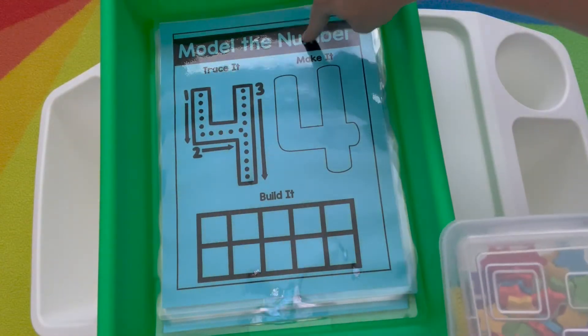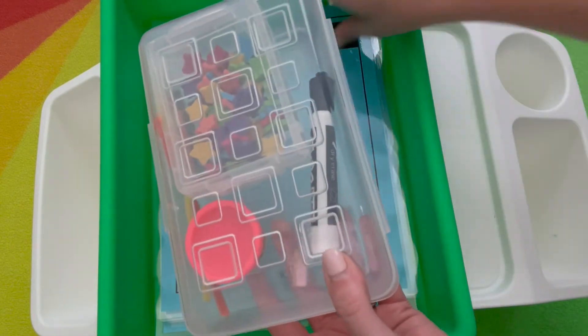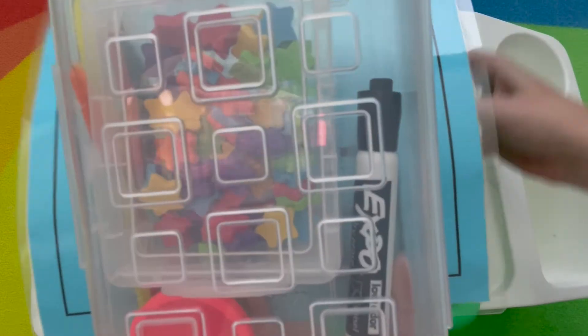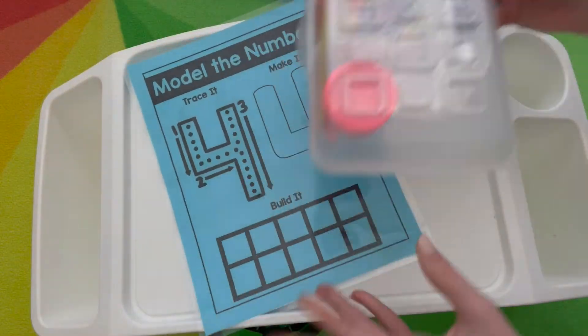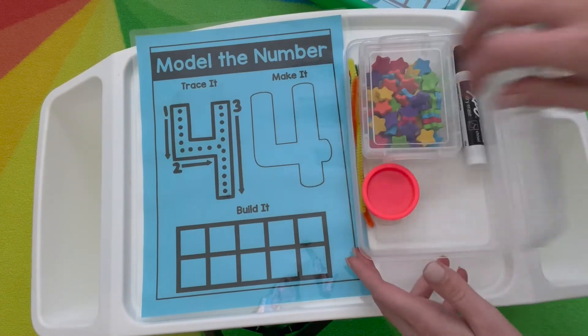For this activity, we have model number mats, zero through five, and then a bin with the materials that we'll use. So I pull out one of the cards to get started. They're going to trace it, make it, build it. And here's the tools they'll use.